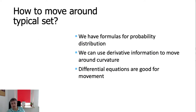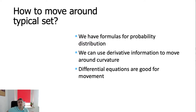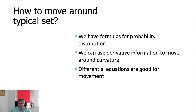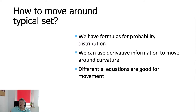How to move around the typical set? We have formulas for the probability distribution, but as we know, those formulas are practically useless because we do not have the formula for the entire distribution — only its numerator. However, we can know something about the curvature of the probability distribution from its derivatives. Moreover, the movement around curves is often described using differential equations, because all motion equations since Newton behave as movement along curves.